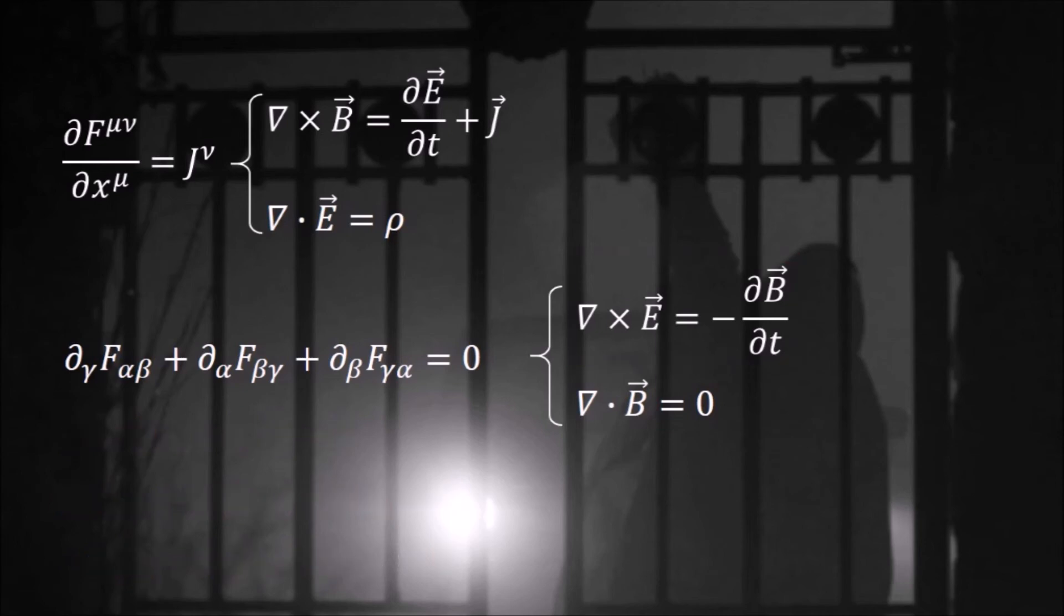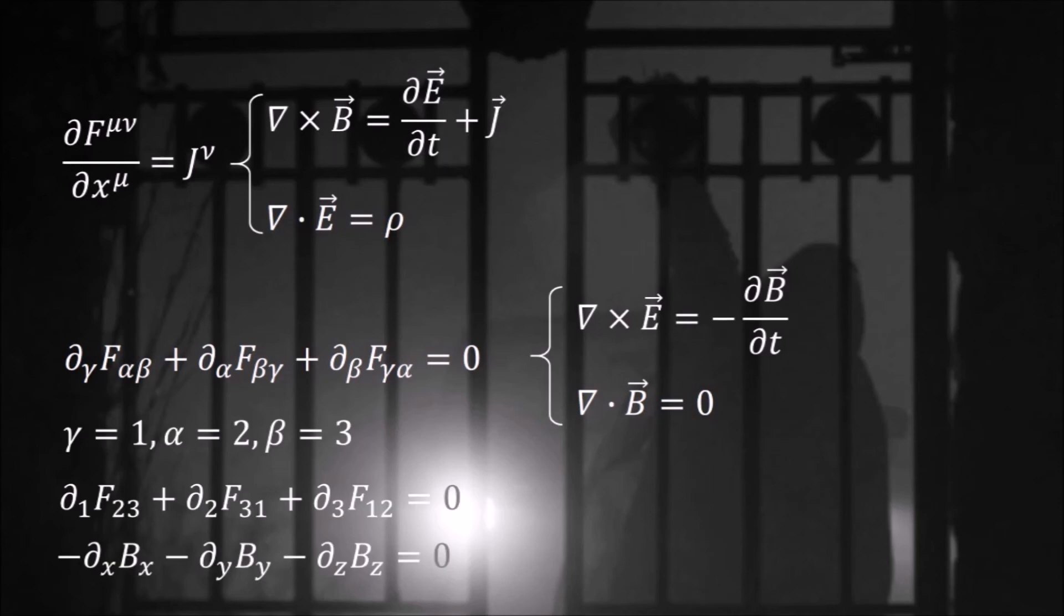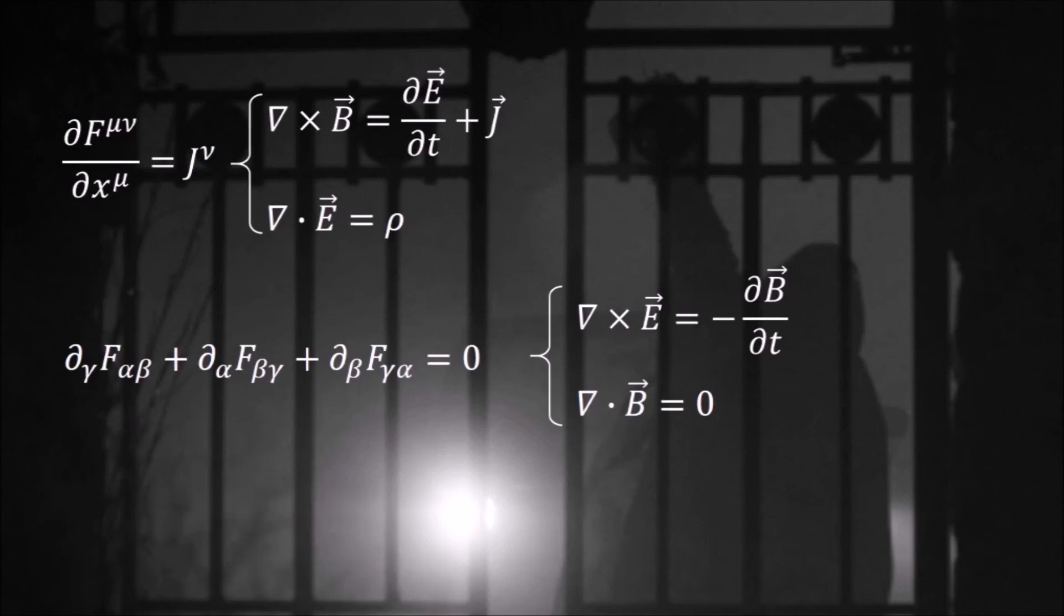Let's do one more. Take gamma equals to one, alpha equals to two, and beta equals to three. This combination will yield this equation, which is just this Maxwell's equation. All other combinations will give you either one of these two Maxwell's equations or a trivial statement.